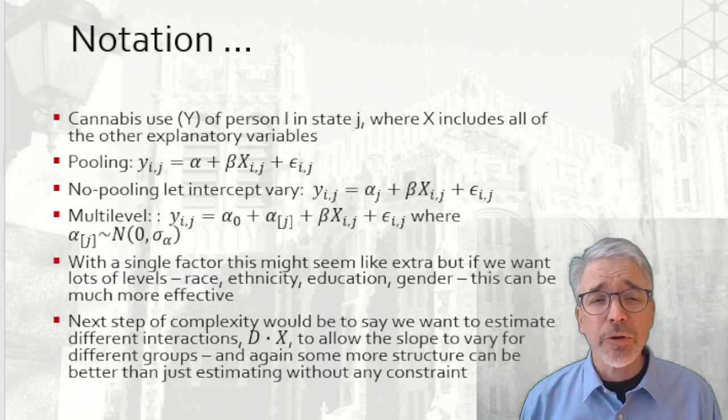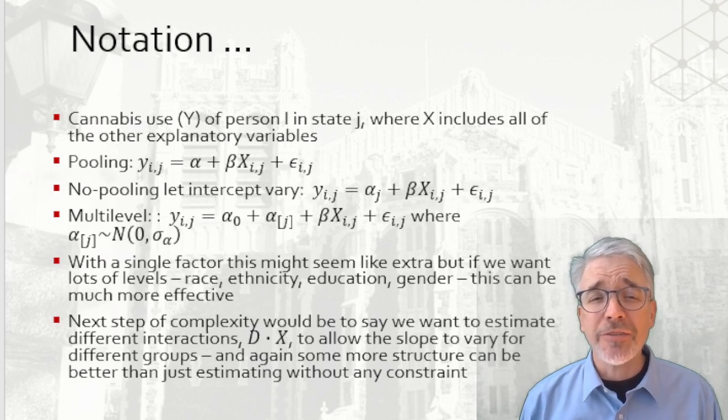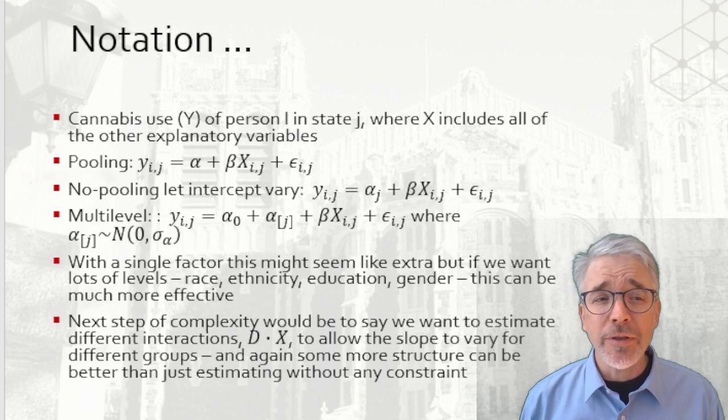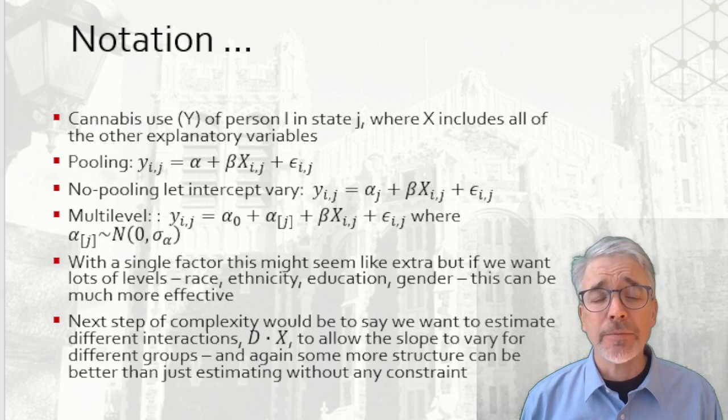Going deeper in the notation, we want to model the usage of person i in state j, where X includes all the other explanatories. With a pooling model, y_ij is going to be alpha, that's the ordinary coefficient for everyone, plus beta X_ij plus the error.